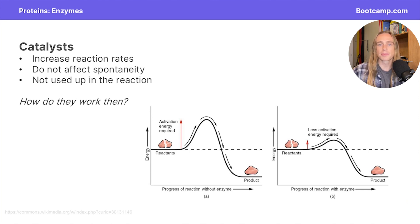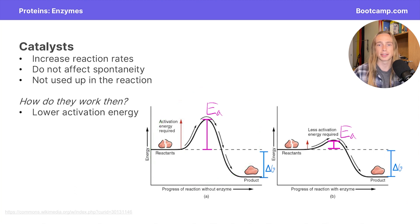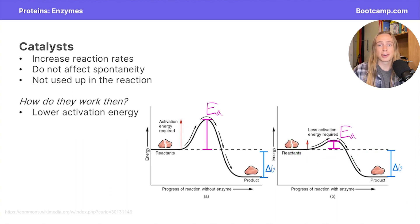So if a catalyst speeds up a reaction but doesn't affect the spontaneity of a reaction and isn't used up in the process, how do you think these are going to work to help increase the reaction rate? Catalysts work by decreasing the activation energy required. Notice that the reaction on the left is uncatalyzed and has a really large activation energy, while the catalyzed reaction on the right has a much smaller activation energy. This lower activation energy enables the reaction to proceed much more rapidly than the uncatalyzed reaction.